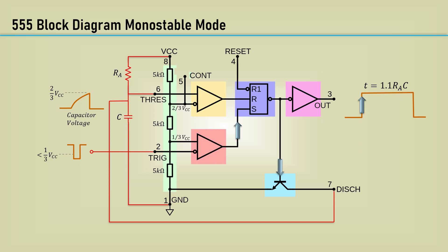When it reaches the threshold voltage of two-thirds VCC, the output of this comparator goes high, which resets the flip-flop, and causes the output to go back to low. Now let's go figure out what that 1.1 is all about.